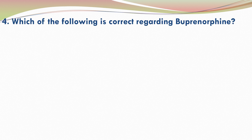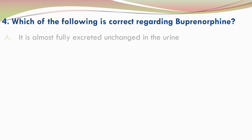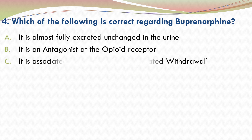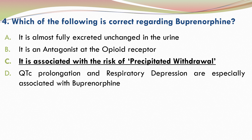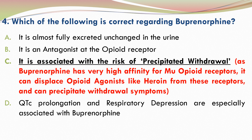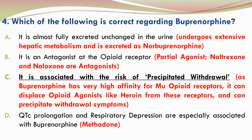Question 4. Which of the following is correct regarding Buprenorphine? Please go through the options and choose your answer. The correct answer is C — Buprenorphine is associated with the risk of precipitated withdrawal. As Buprenorphine has very high affinity for opioid receptors, it can displace opioid agonists like heroin from these receptors and can precipitate withdrawal symptoms. The other three options are not correct.